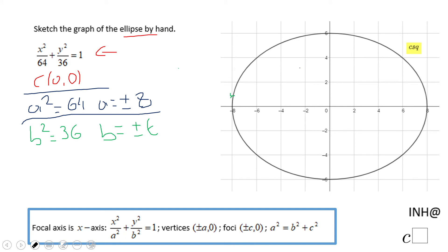Now if you really want to find more, like for c, that can be done, right? c squared will be what here? 64 minus 36. Okay.